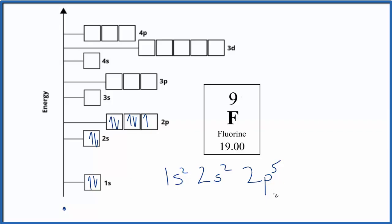Pause and rewrite this for the fluoride ion — fluorine when it gains an extra electron. For the fluoride ion, F⁻, it gained an extra electron, so we'll put that right here. Now the second energy level is full. We change the 2p to 6, giving 1s² 2s² 2p⁶. This is our electron configuration and orbital diagram for the fluoride ion.